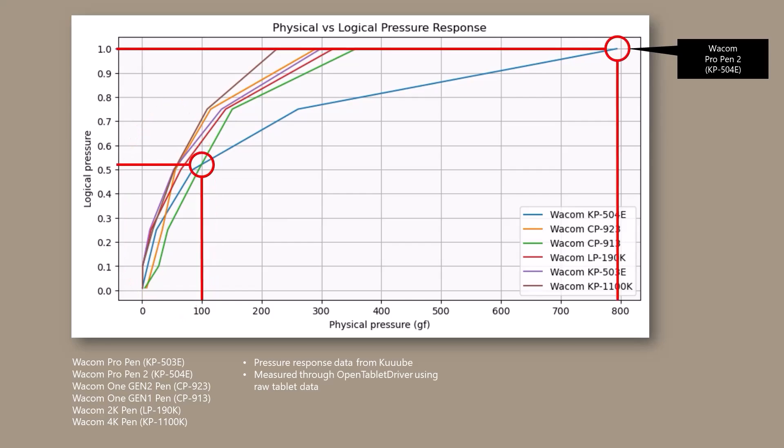Let's take a look at the Wacom Pro Pen 2. The Wacom Pro Pen 2 has a pressure range of about 800 gram force. But if we press down with just 100 gram force, we will have hit the logical pressure of about 50%. We would have to press down with an additional 700 gram force in order to achieve 100% logical pressure. The other pens have a similar behavior.